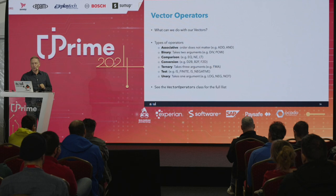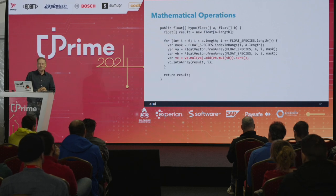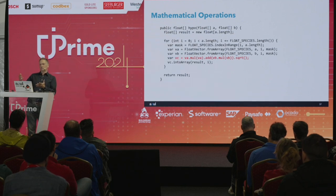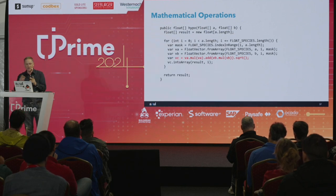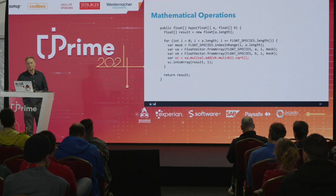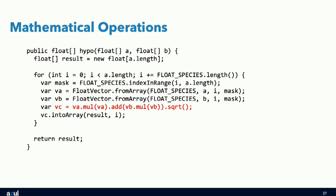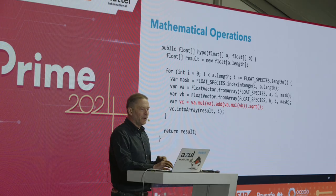For mathematical operations, once you've populated two vectors using masks, you simply chain operations together. For example, to calculate a Pythagorean-type result: va.mul(va).add(vb.mul(vb)).sqrt() — that's a squared plus b squared, then square root. The simplicity is just chaining together the operations you want.